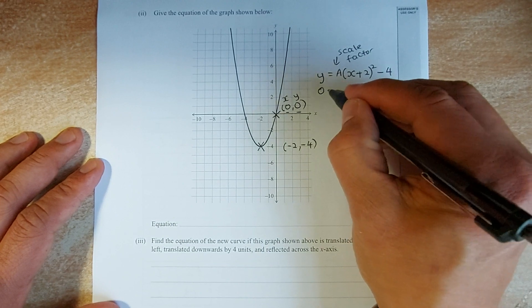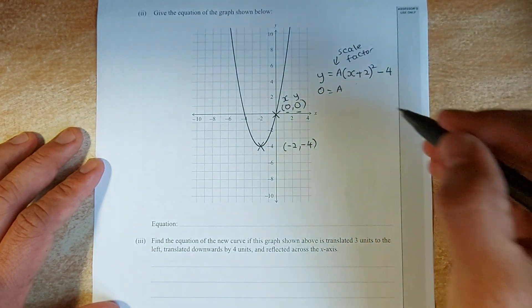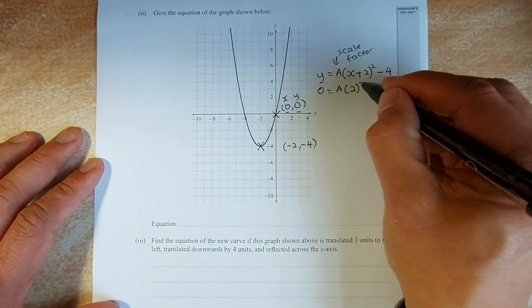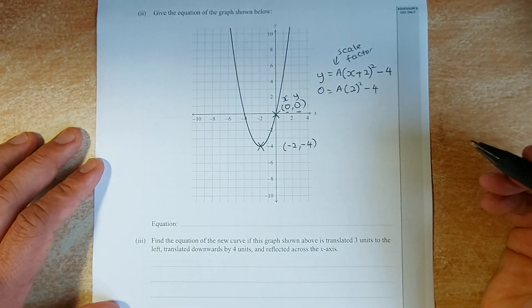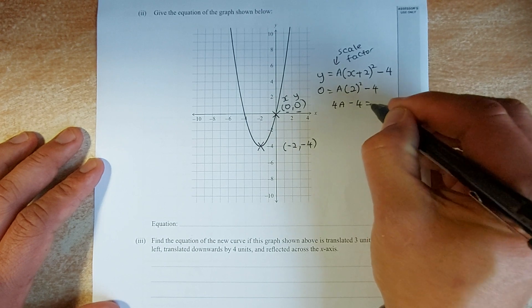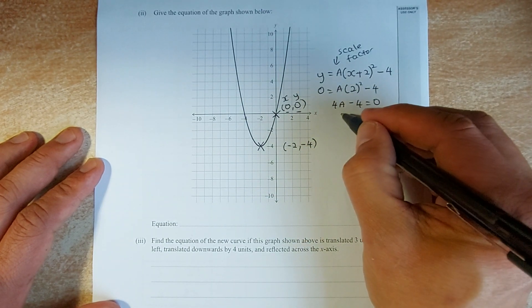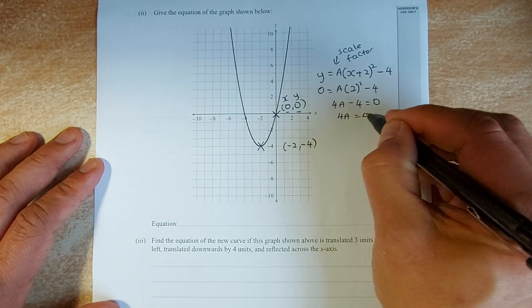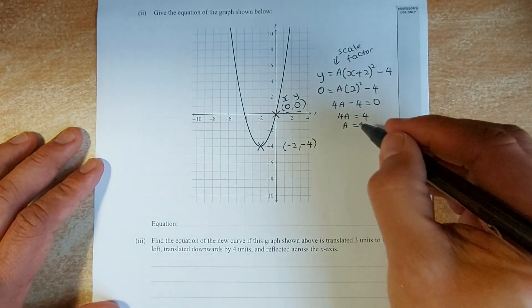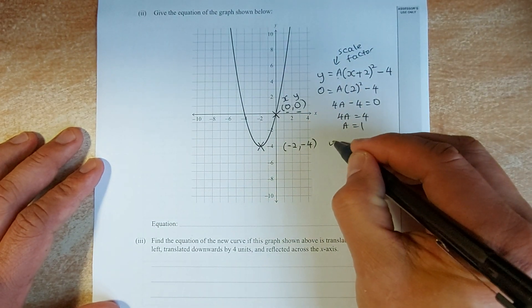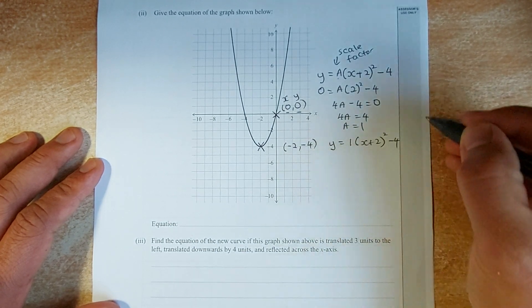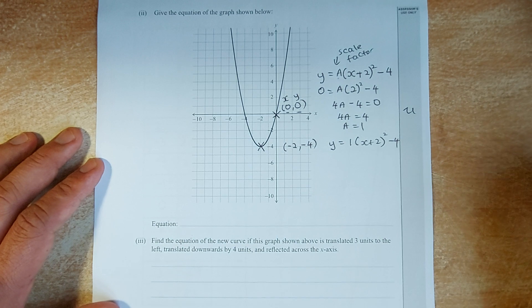Now we are going to substitute that x and y value into that equation to get the value of a. So instead of y, you are going to replace with 0. a is what you are going to find, so a will remain. Instead of x, it is going to be 0, 0 plus 2 squared is going to be 2 squared minus 4. We are going to solve the equation around, so square it, so 4a minus 4 equal to 0, and you solve algebraically, you plus 4 on both sides, 4a equal to 4, and divide by 4, a equal to 1. Once you have that equation, put back that scale factor into the equation. So the equation is y equal to 1, x plus 2 squared minus 4, and that will give you your second achieved in this paper.